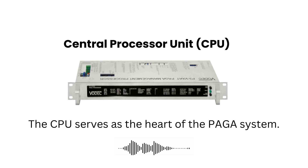The CPU serves as the heart of the PA-GA system. It connects various inputs such as microphone access panels, alarm contacts, and audio from other devices such as PABX and radio systems to the amplifiers, which will amplify and broadcast the messages throughout the facility.